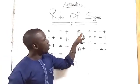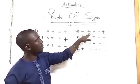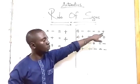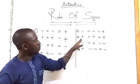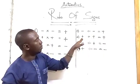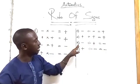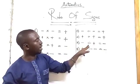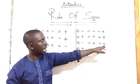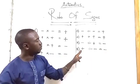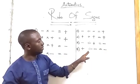For division: number one, minus divided by minus equals plus. Number two, plus divided by plus equals plus. Number three, minus divided by plus equals minus. Number four, plus divided by minus equals minus.